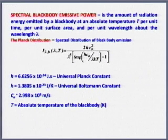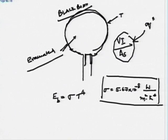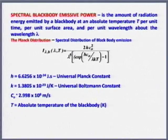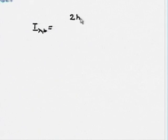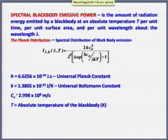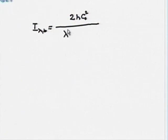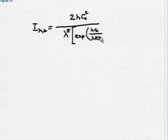Now, what is the spectral distribution? I want to write the Planck's distribution relation. The spectral intensity for a black body is: I_λ,b = 2hc₀² / [λ⁵ (exp(hc₀/λkT) − 1)], where h is Planck's constant, k is Boltzmann's constant, and c₀ is the velocity of electromagnetic waves in perfect vacuum.